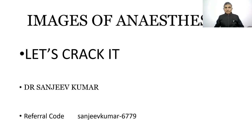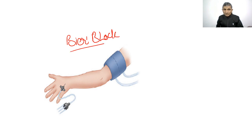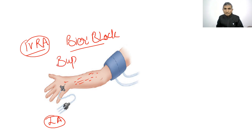In this video we'll discuss images of anesthesia from which image-based MCQs will be asked. The first image is of Bier's block. A tourniquet is applied over the arm and an IV cannula is on the dorsum of the hand. Local anesthetic is given through the IV cannula. Because the cuff is inflated, the local anesthetic remains in the limb, anesthetizing it. This is also known as IVRA block — intravenous regional anesthesia. The drug contraindicated in Bier's block is Bupivacaine.